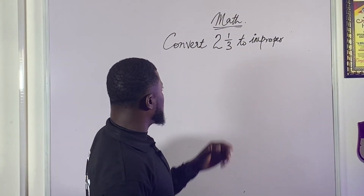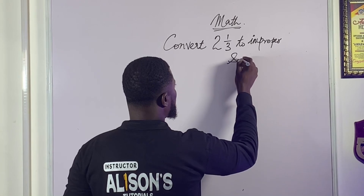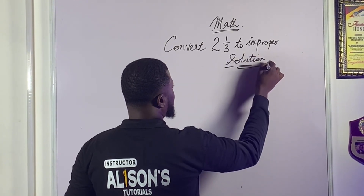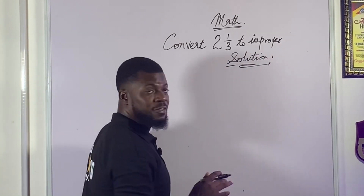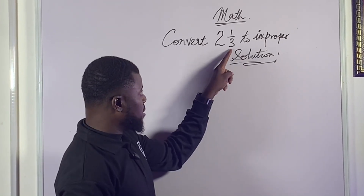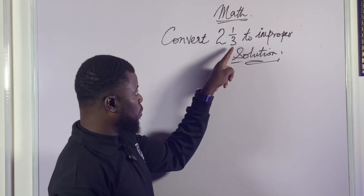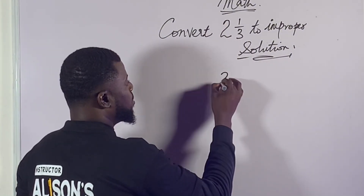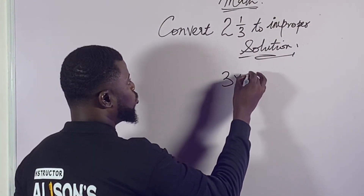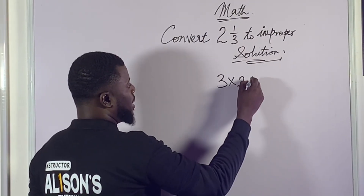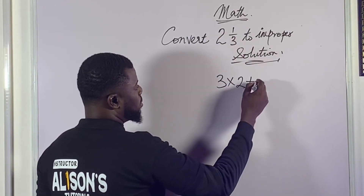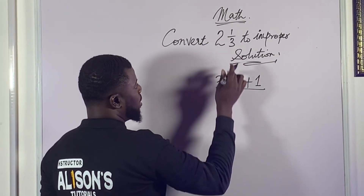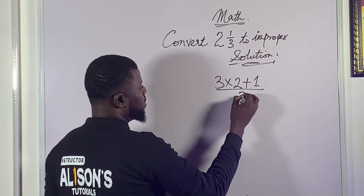So let's solve this quickly. What do we need to do to convert this mixed fraction to an improper fraction? First things first: make sure to multiply the denominator of the fraction by the whole number. So that would be 3 multiplied by 2, and then you add it to the numerator which is 1, then divide the whole process by 3.